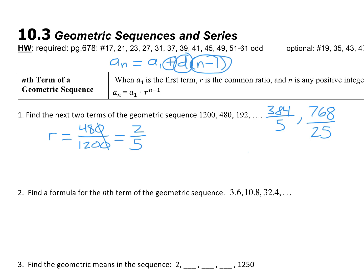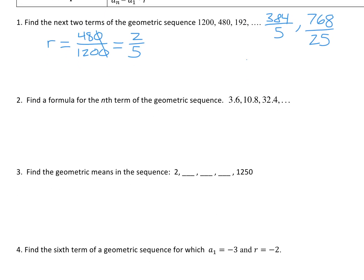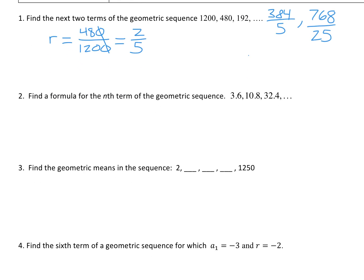For number two, we are finding a formula. Similar to what we did in 10.2, we are not going to plug in for a_n and we're not going to plug in for n. For writing the formula, we want it to still say a_n equals. Here's a1, and I have to figure out what r is — r is the second number divided by the first number. So r is 3. So it's a_n equals a1 times r to the power n minus 1.